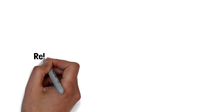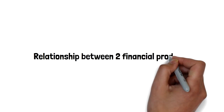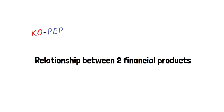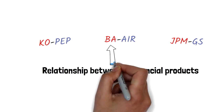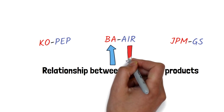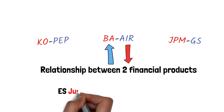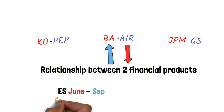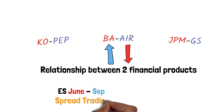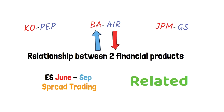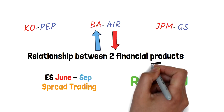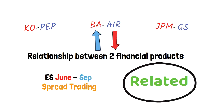Pairs trading is basically a relationship between two financial products. Simple examples include Coca-Cola and Pepsi, Boeing and Airbus, or JP Morgan and Goldman Sachs. We go long one of these stocks and short the other. This can also be applied to futures — for example, going long June S&P 500 and short September, which is called spread trading in futures. The most important thing is that the two instruments must be related to each other — Boeing and Airbus are related, but Coca-Cola and Boeing are not.